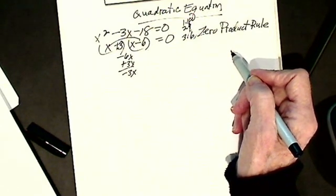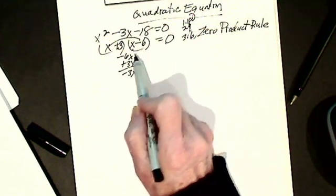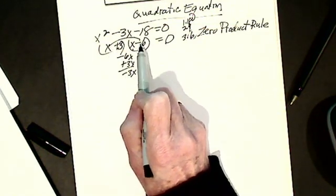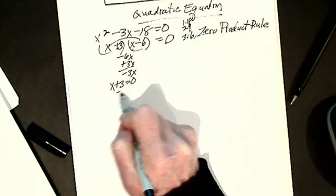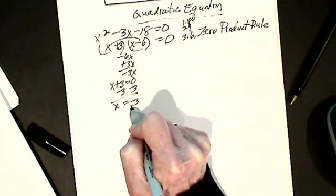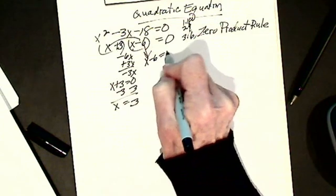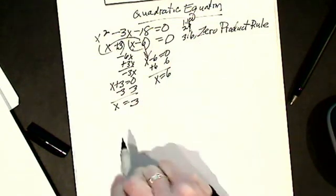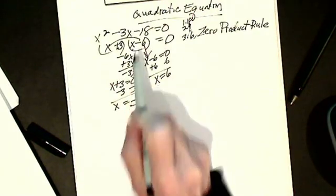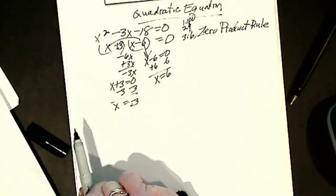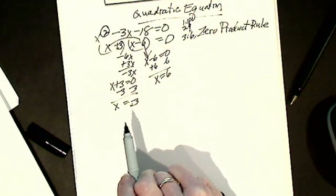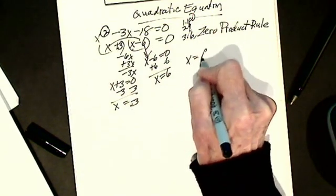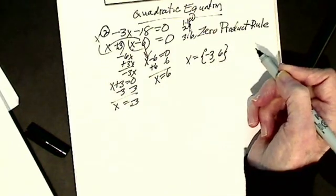Things that are multiplied are called factors; things that are added or subtracted are called terms. So now I have this equation and I want to solve it. I know that this factor equals 0 or that factor equals 0. I can take each factor, set it equal to 0, and solve. Solving x plus 3 equals 0 gives x equals negative 3. Solving x minus 6 equals 0 — I add 6 — gives x equals 6. So I have two possible answers. For a quadratic equation with an exponent of 2, there are two possible answers: x equals negative 3 or 6. Order doesn't matter.